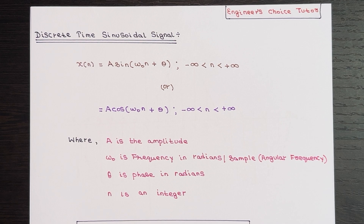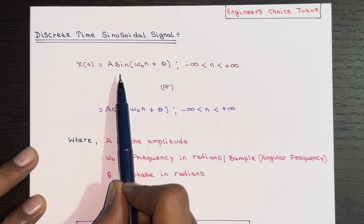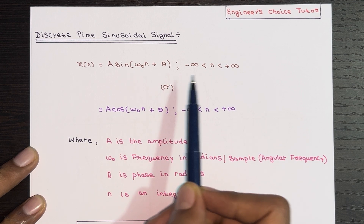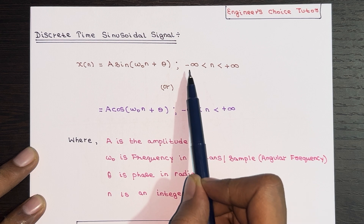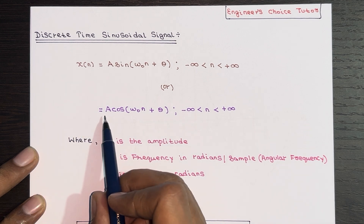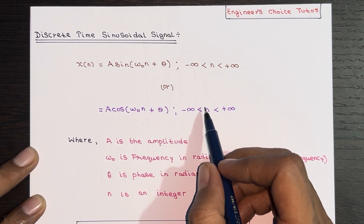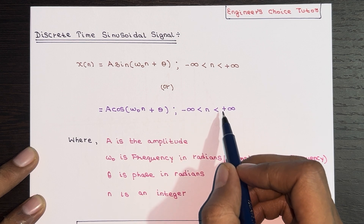Get ready for an exciting lecture on discrete time sinusoidal signals. A discrete time sinusoidal signal can be expressed as X(n) = A·sin(ω₀n + θ) where n is between minus infinity to plus infinity, or as X(n) = A·cos(ω₀n + θ) where n ranges from minus infinity to plus infinity.